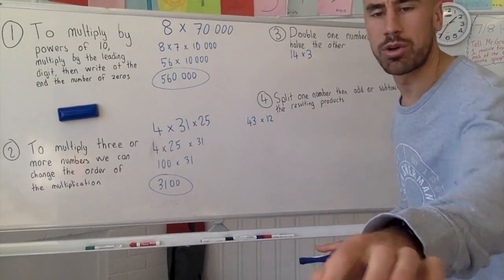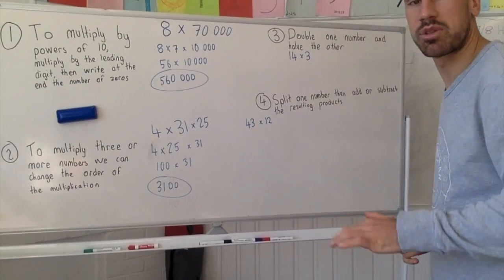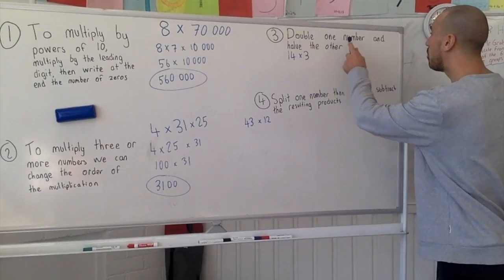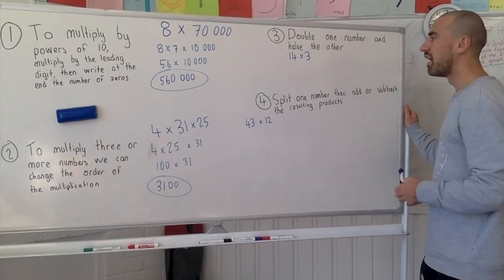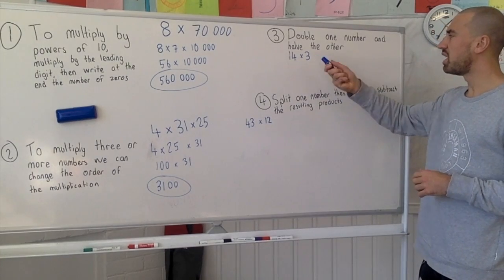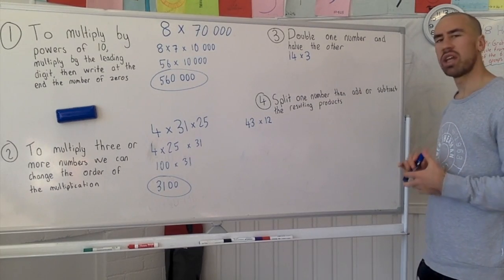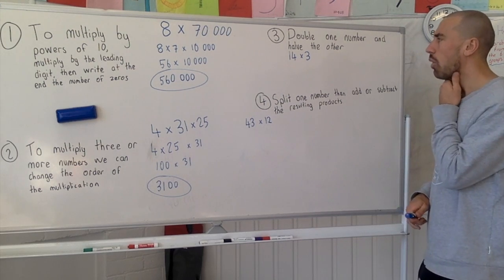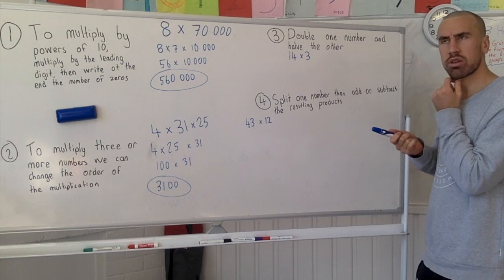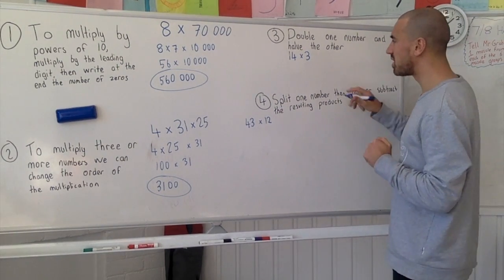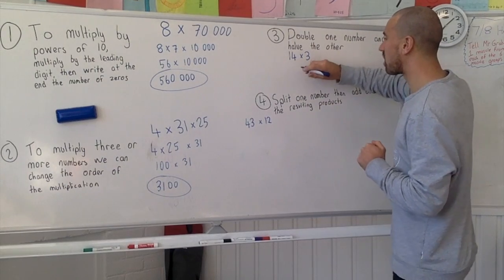Alright, strategy number three: double one number and half the other. So we have 14 times 3. Double one, half the other. Are we going to half the three or double the three, what do you reckon?